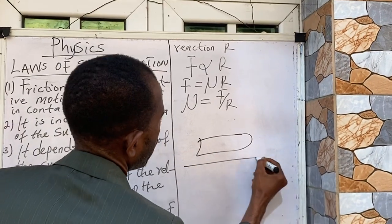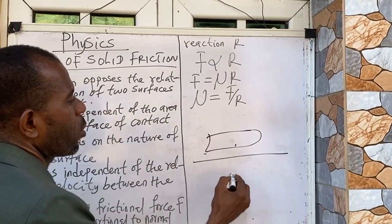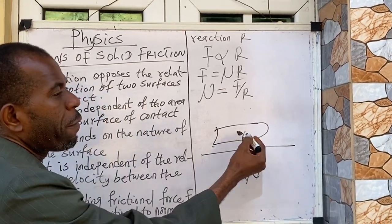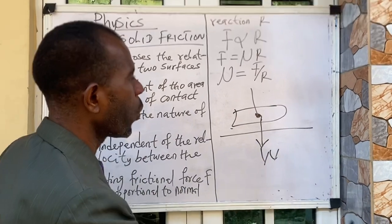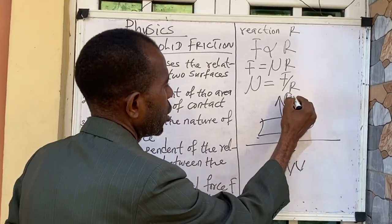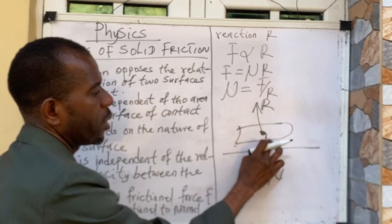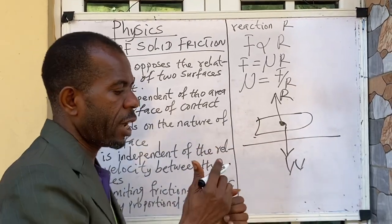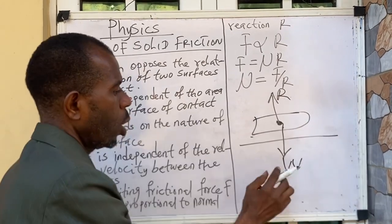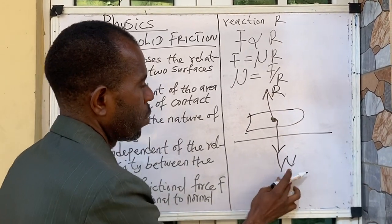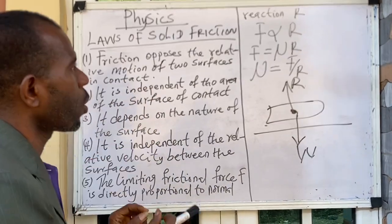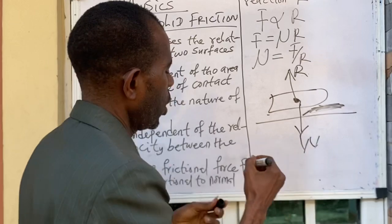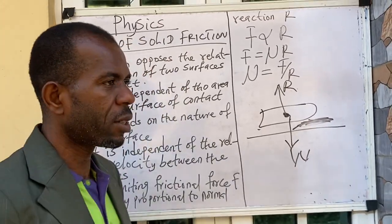Consider a body resting on a surface. According to Newton's third law, this body has a weight W acting downward, and the surface acts on the body with an equal but opposite reaction R. So this surface is also acting on this body, meaning R equals W. According to the fifth law, this resistive frictional force is directly proportional to this normal reaction R.